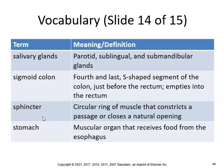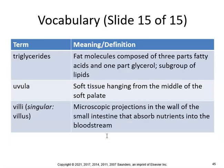The stomach is the muscular organ that receives food from the esophagus. Triglycerides are fat molecules composed of three parts fatty acids and one part glycerol — a subgroup of lipids; you check your triglyceride level in blood work. The uvula is soft tissue hanging in the middle of the soft palate. Villi are microscopic projections in the wall of the small intestine that absorb nutrients into the bloodstream.